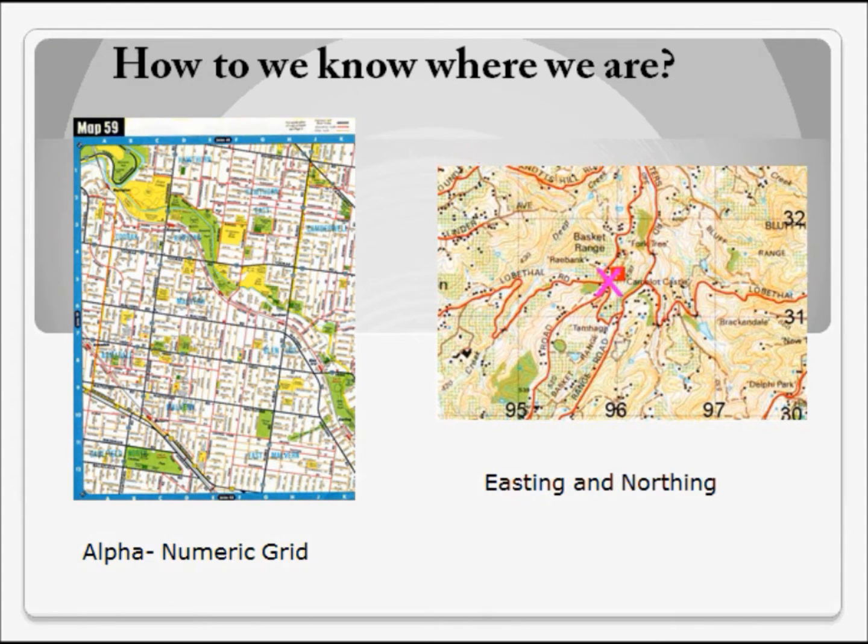We often use grids to be able to locate places. One of the very common forms of grids is our Melways map which is a form of alphanumeric grid. The alphabet and the numbers will give us an identification of a square that we can then find the feature we are looking for. On the right hand side is a topographic map that uses numbers on the horizontal and vertical axes and they are called Easting and Northing numbers. Not only do they identify the square that we are looking at but they can also identify a position within the square.